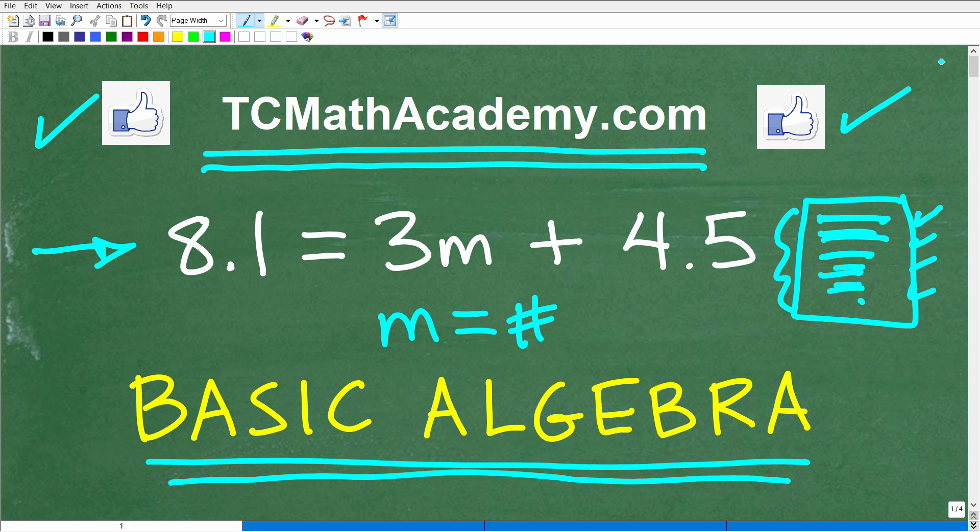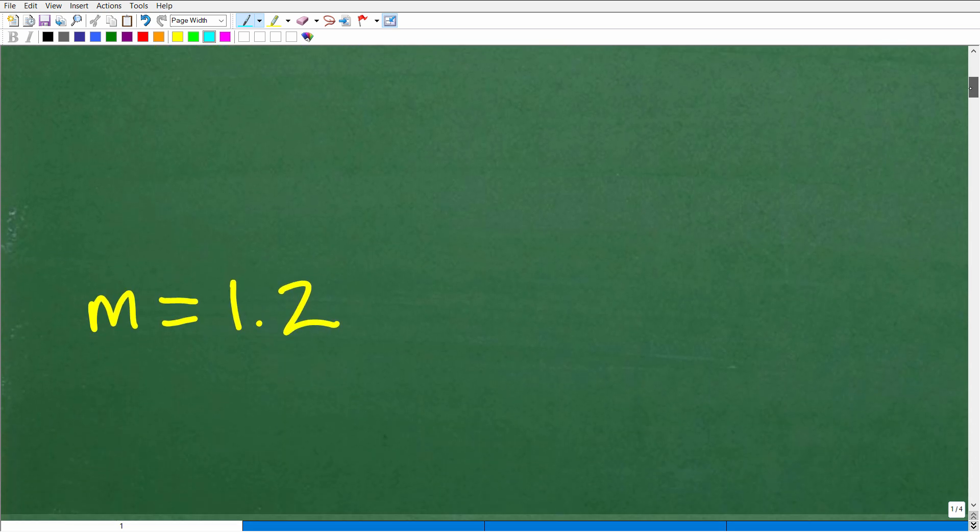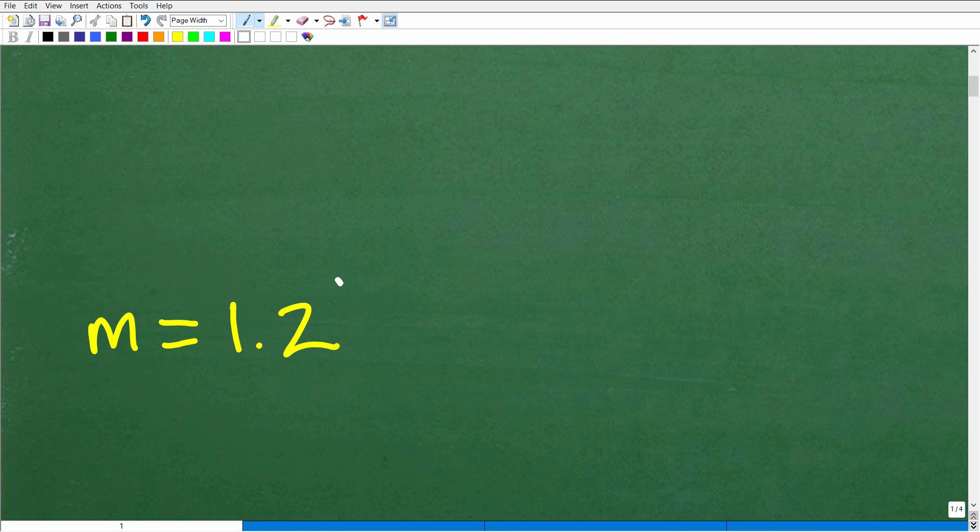Okay, so let's take a look at the answer here again. 8.1 equals 3m plus 4.5. We're looking for m. What is m equal to? Well, the answer is the following: m equals 1.2.